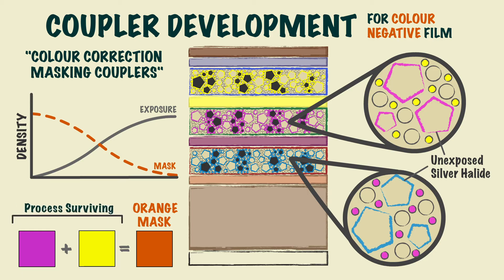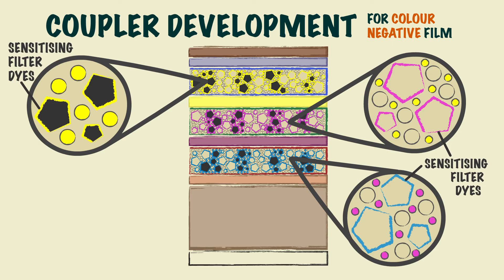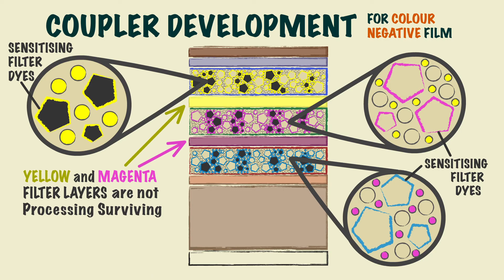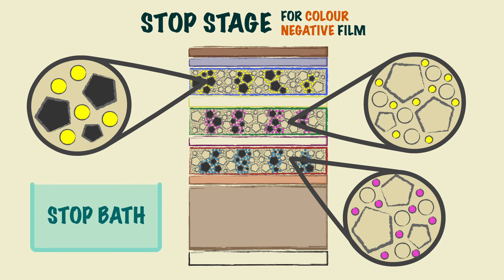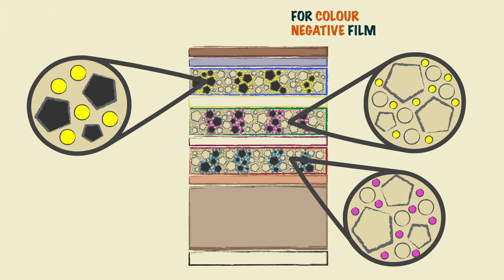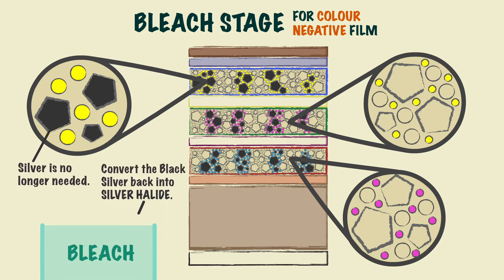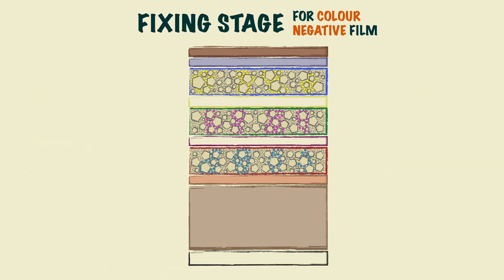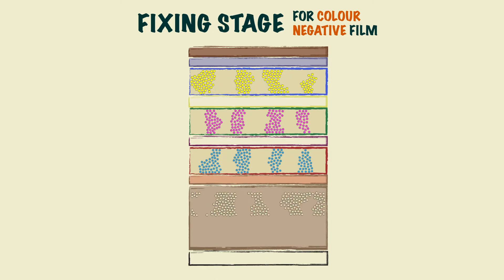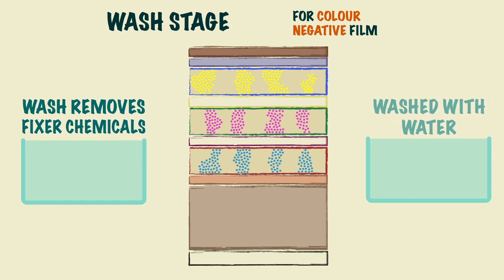The masking couplers are also known as process surviving and stay permanently on the film. However, sensitising filter dyes and both the yellow and magenta filter layers are not process surviving and are removed in this stage, since they were only needed when the film was being exposed. After this, the stop bath is used to stop the chemical process of the developer, and then the film is bleached. Since colour film is formed with dye, the silver is no longer needed, so bleach is used to convert the black silver back into silver halide. This is then washed away by the fixer, along with the unexposed silver halide and unused imaging couplers. A wash then removes the fixer chemicals, and lastly, the film is washed with water and dried.